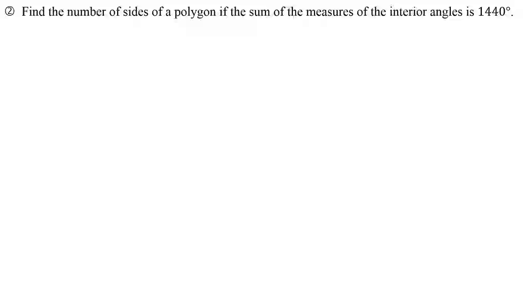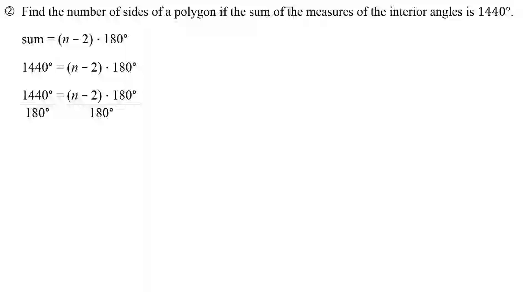What if we know the sum is 1,440 degrees? How many sides do we have? Well, we're going to use the same equation: n minus 2 times 180 degrees will give us the sum. Whereas this time, instead of knowing the number of sides, we know the sum has to be 1,440 degrees. I prefer to divide both sides by 180 degrees. Notice, when I divide by 180 degrees, the degrees cancel out, because n is just going to be the number of sides. Add 2 to each side. You find out that we're dealing with a 10-sided polygon — in other words, a decagon.